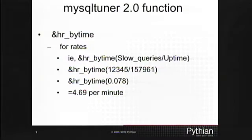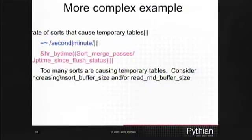HR_bytime takes a value per second and makes it readable. If it's less than one, it's converted to value per minute, per hour, per day, whatever. 0.078 slow queries per second is hard to understand, but 4.69 slow queries per minute makes much more sense. Here's an example of rate of sorting causing temporary tables. We divide sort_merge_passes by uptime since flush status to get the per second value, then pass that to HR_bytime.